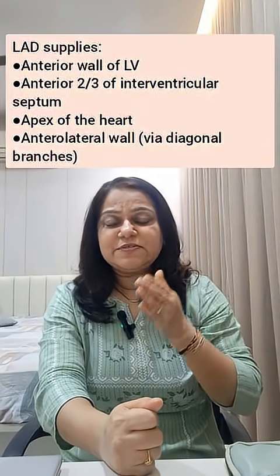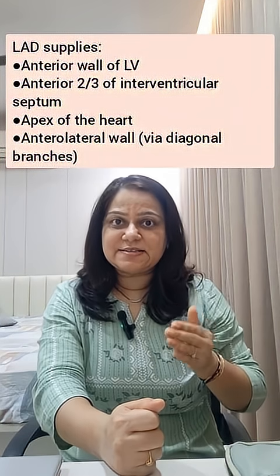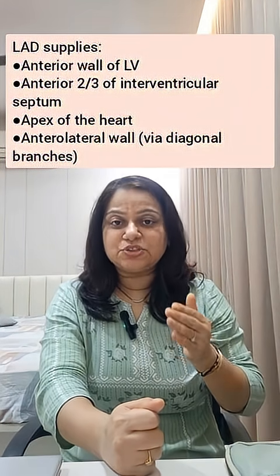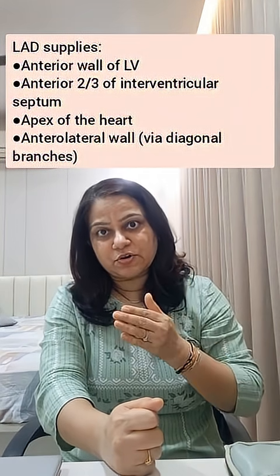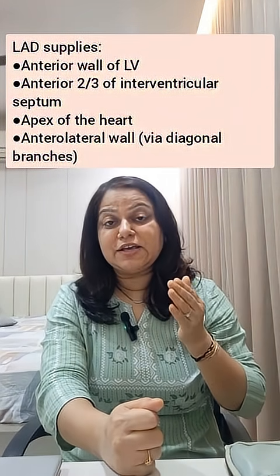The infarct vessel is the left coronary artery anterior descending branch. It runs in the anterior interventricular groove. This is the left anterior descending branch of the coronary artery.